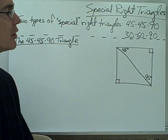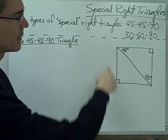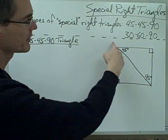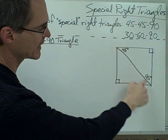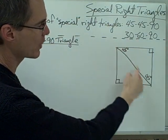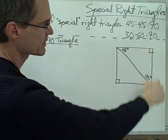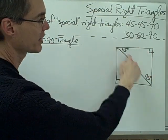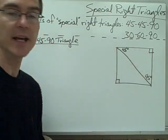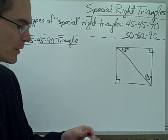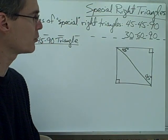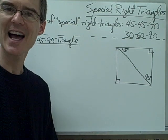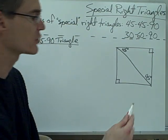Let's start out by taking a look at the 45-45-90 triangle. Here we've got a picture of a square with a diagonal drawn, and when you draw that diagonal in the square, you can see it creates a right triangle — actually two right triangles — that are 45-45-90 triangles. What we want to do is come up with an expression for the ratio of the sides of a 45-45-90 triangle.